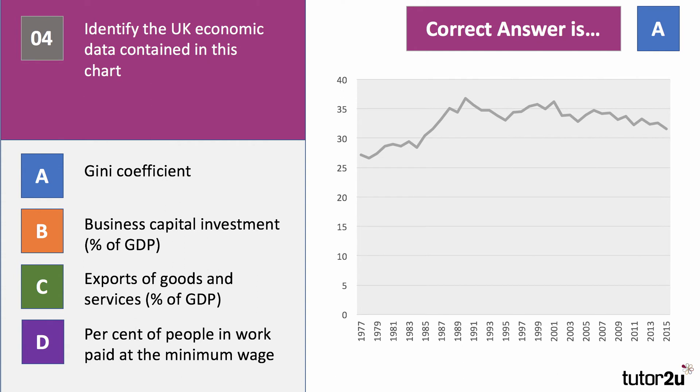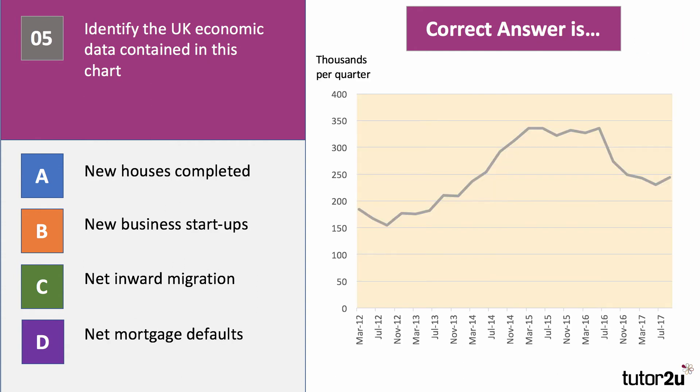Chart five: identify the economic data contained in this chart. The data is in thousands per quarter. Is it new houses completed, new business startups, net inward migration, or net mortgage defaults? Press pause, have a go, and press play when you want the answer.